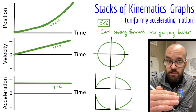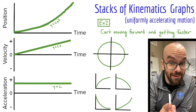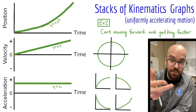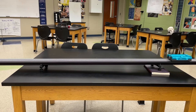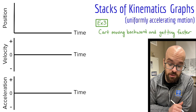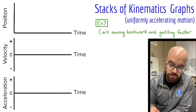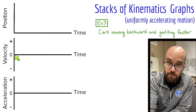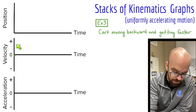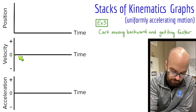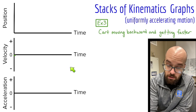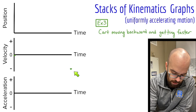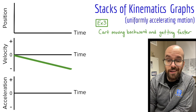Here's example three. The cart is moving backward, and it's getting faster. The big difference here is we're moving in the negative direction. At the beginning it was stopped, so we still start with a zero velocity. Now it's moving backward and getting faster, so instead of going up into the positive side of the velocity graph, we go down into the negative side — sloping downward. We end up with a dot down in the negative region and connect those two points with a straight line.